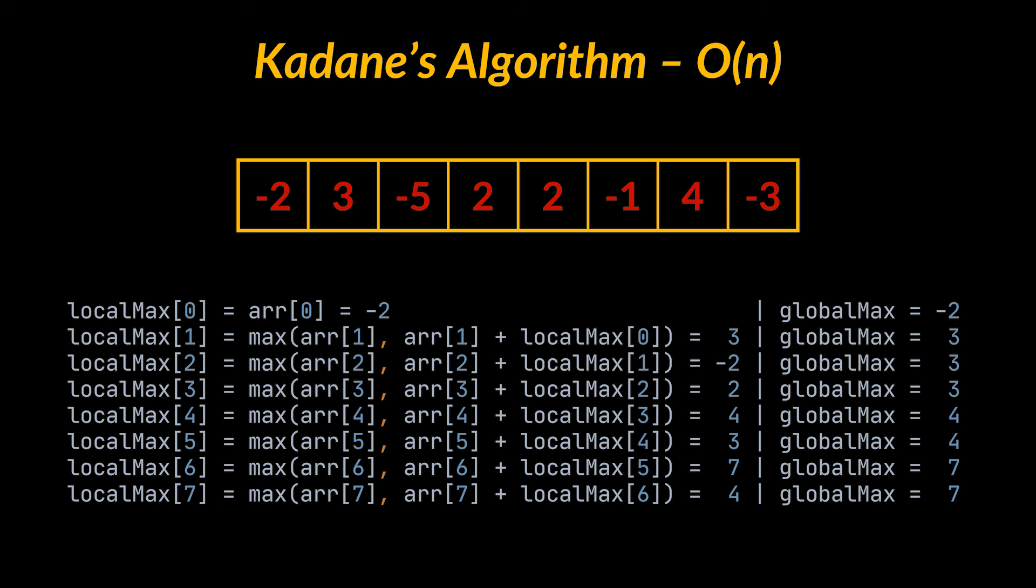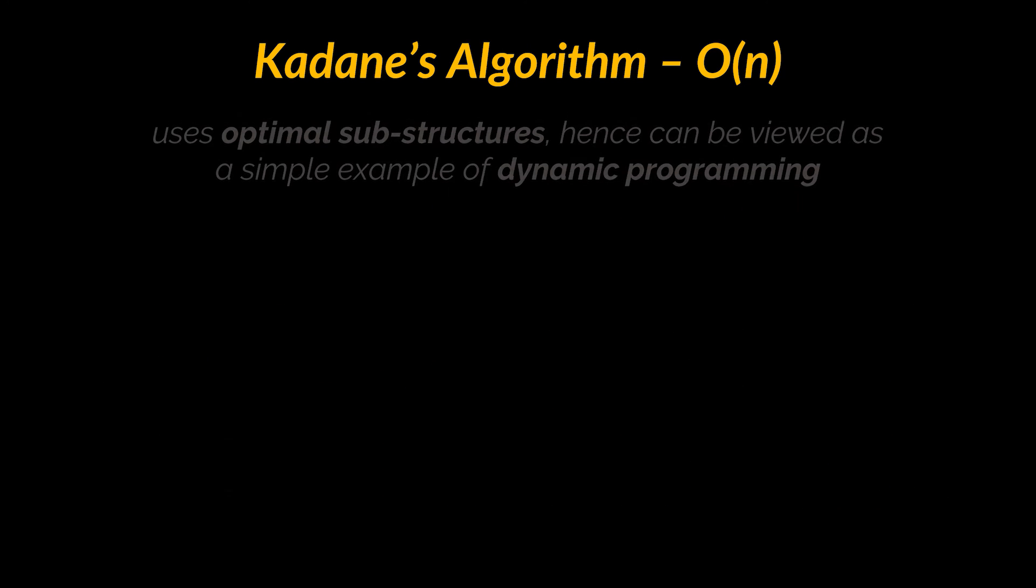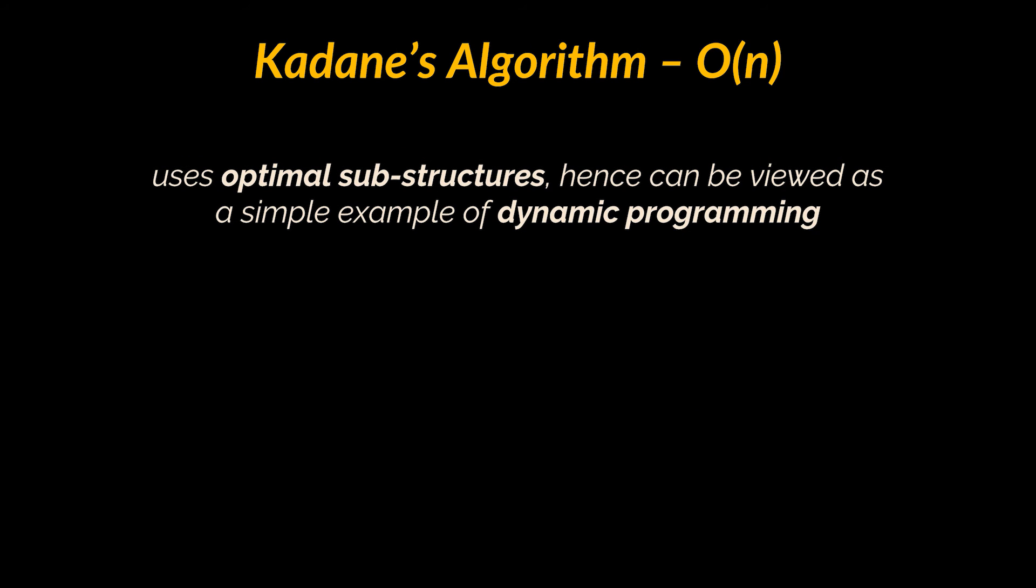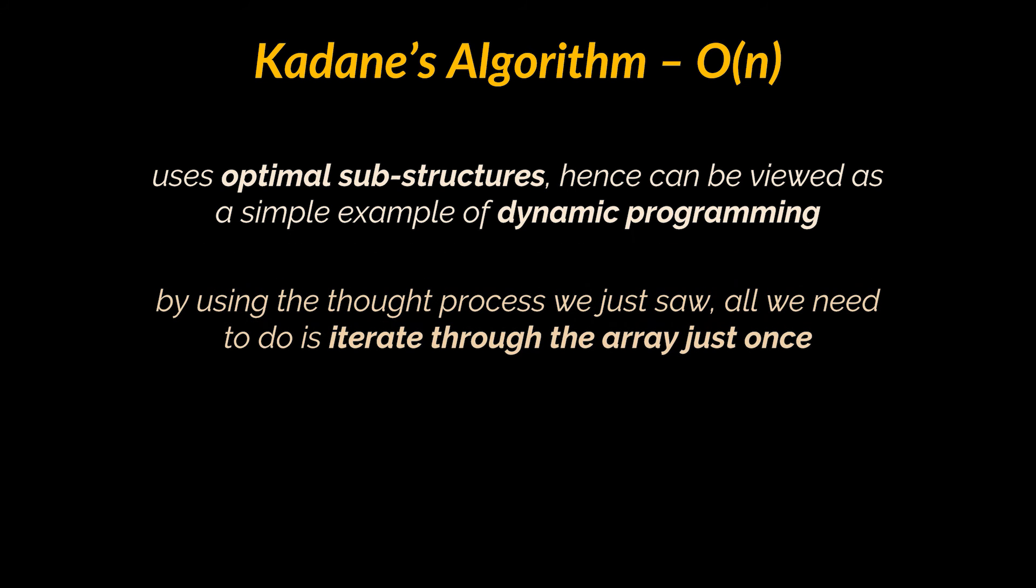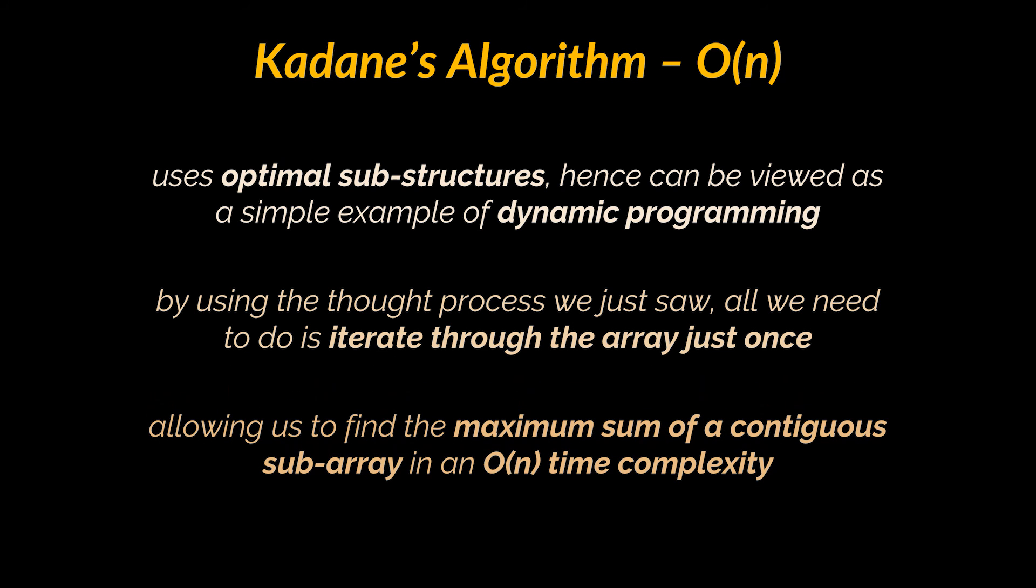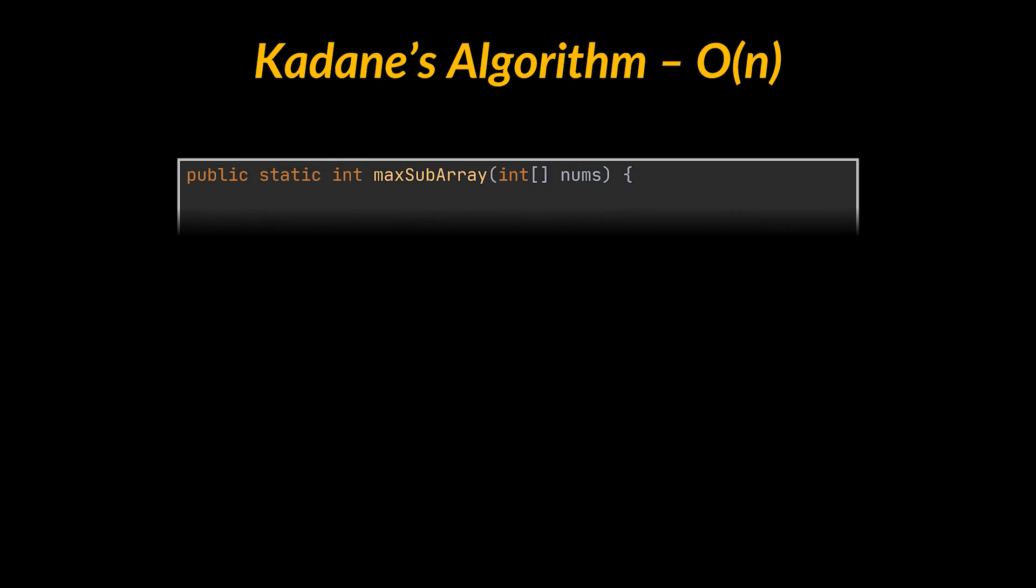So as a recap, Kadane's algorithm uses optimal substructures, hence can be viewed as a simple example of dynamic programming. And by using the thought process we just saw, all we need to do is iterate through the array just once, allowing us to find the maximum sum of a contiguous subarray in an O(n) time complexity. Let's go ahead now and see what this would look like in code.